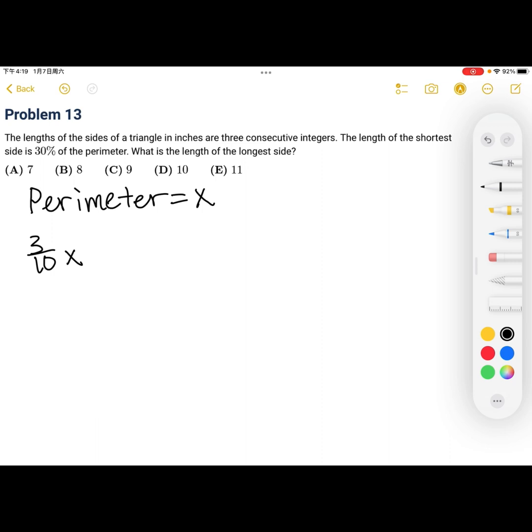And then, to write everything else in terms of x, we can put three tenths x plus three tenths x plus one, since they're all consecutive integers relative to the length of the shortest side. So the last one would be three tenths x plus two.